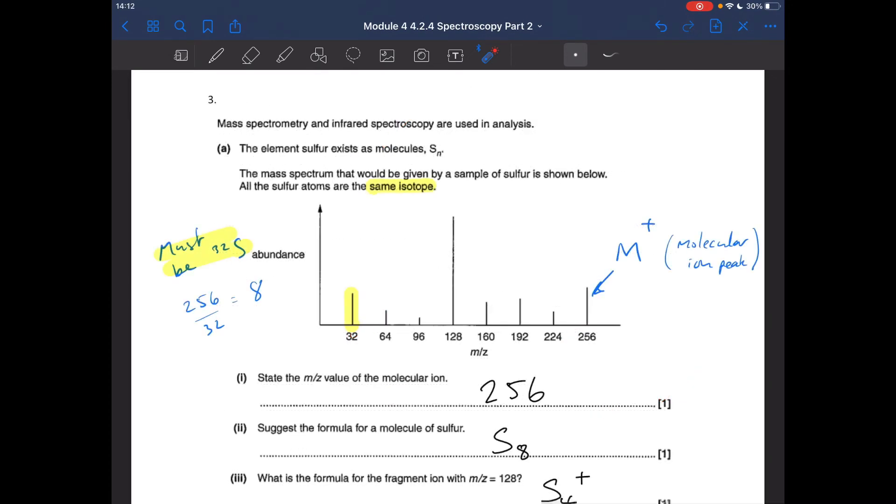OK, so moving on to question three. I've gone for a non-organic question because obviously spectroscopy can be used in inorganic substances as well. So we've got this question about sulphur. Exists as molecules Sn and we've got the mass spectrum. So you can see I'm annotating straight away. I always encourage the students to do that. The peak furthest to the right is the M+ peak or the molecular ion peak. And then look at the first question. State the M/Z value of the molecular ion.